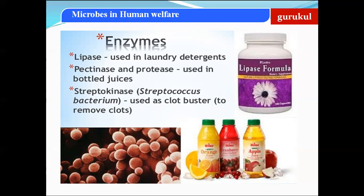The third enzyme is streptokinase, produced by Streptococcus bacteria. It is used as a clot buster to remove clots from blood vessels. Sometimes clots form within blood vessels — a condition called thrombosis — and streptokinase is used to remove these blood clots, which is why it is called a clot buster.